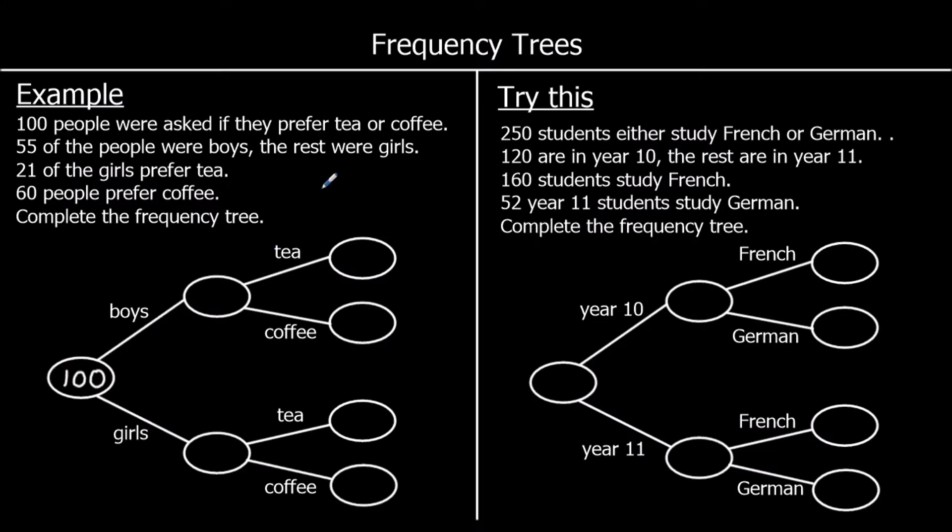We're told 55 of the people were boys and the rest were girls. So 55 are boys. This girls box must be 100 minus 55, whatever adds on to 55 to make the total. 100 take away 55 is 45, so this box must be 45. These two boxes make the total. And then we break them down again. So the boys box gets broken down to boys that like tea and boys that like coffee.